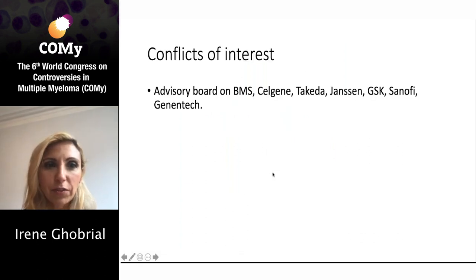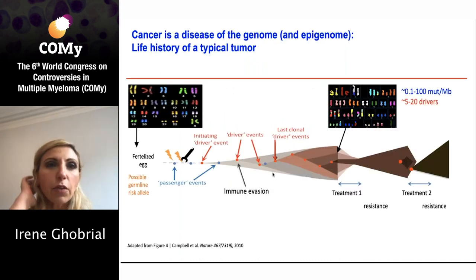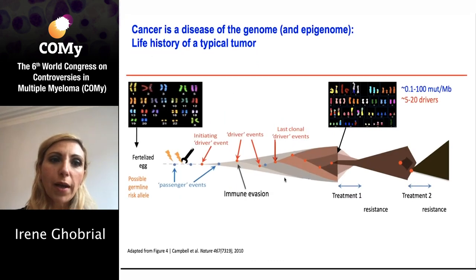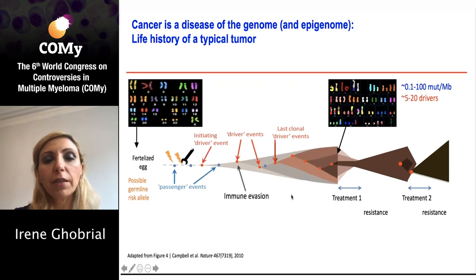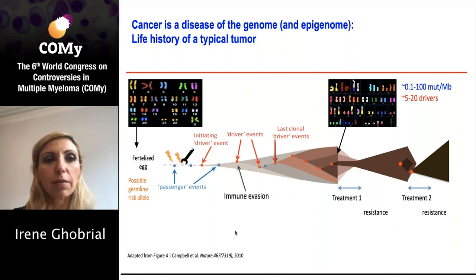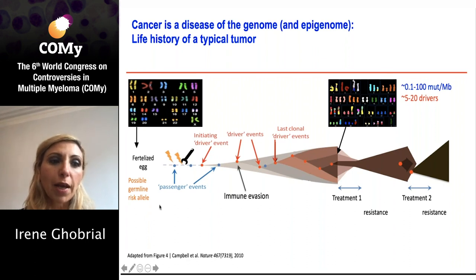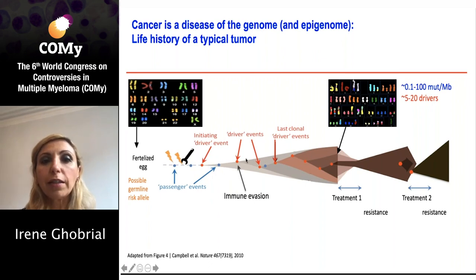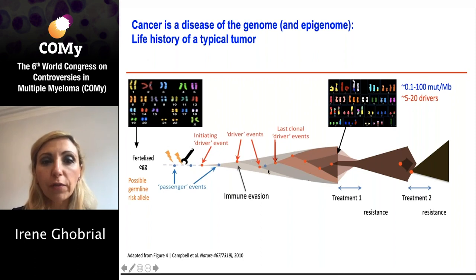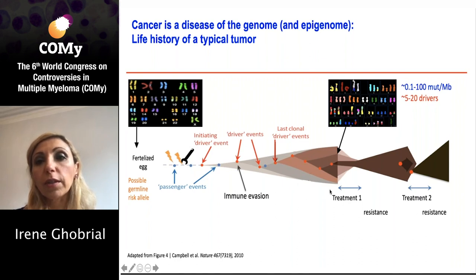These are my conflicts of interest. For many years, we've talked about cancer as the disease of the tumor cells, discussing how early events happen, potentially because of an early germline risk allele. You have one initial driver event that leads to further progression of the clone, and then you acquire several other driver events, potentially immune evasion, until finally you have the clone or multiple subclones and develop the disease — in this case, multiple myeloma.